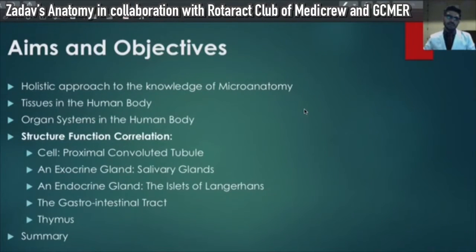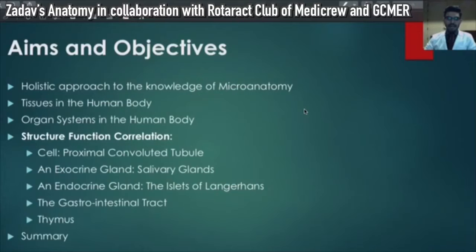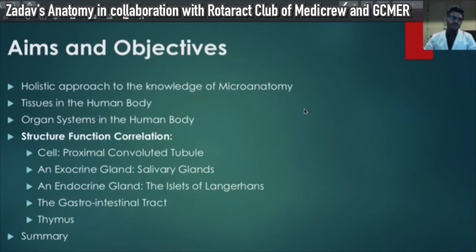The aims and objectives today are a holistic approach to the knowledge of microanatomy. The lecture is not going to deal with multiple points to mug up and remember. It's going to give you basic wisdom about how to approach a certain kind of tissue when you're studying it — how knowing a little about the function of that tissue gives you insight into why the structure would be in a certain way. I'm going to start off by talking about tissues in the human body as a quick recap, then organ systems, then the main part: structure-function correlation. I'm going to use four examples: a proximal convoluted tubule cell, its structure and function; then an exocrine gland.